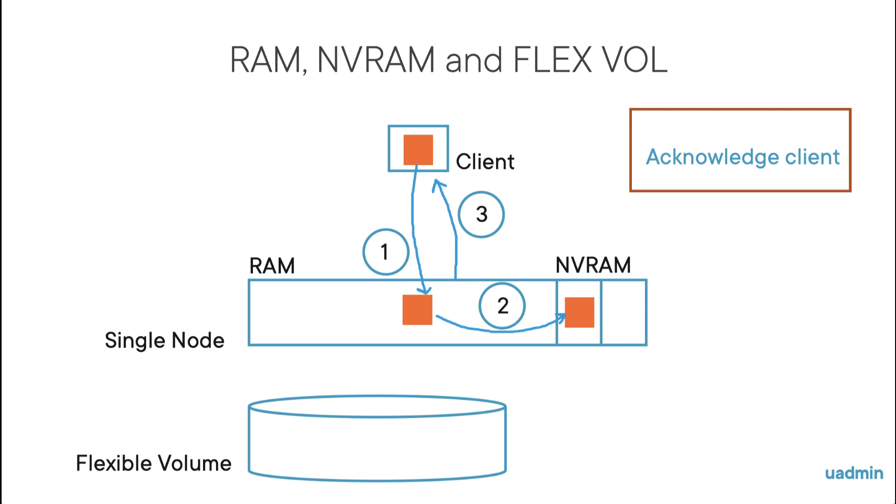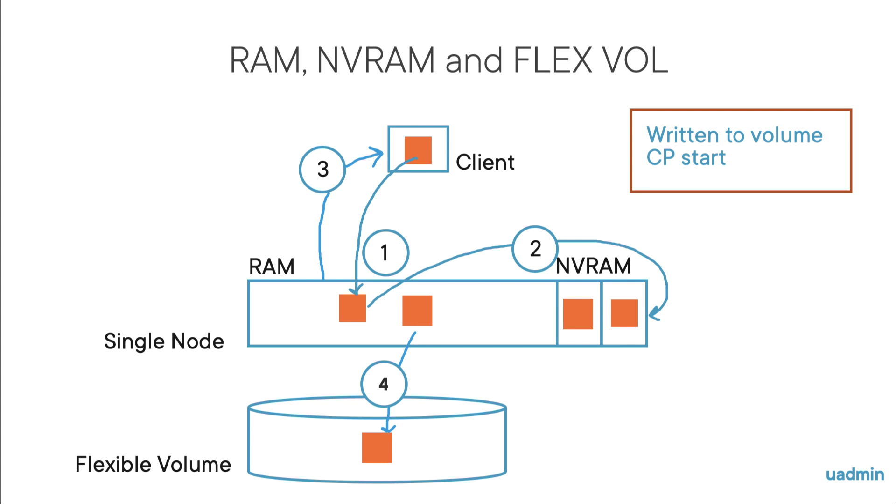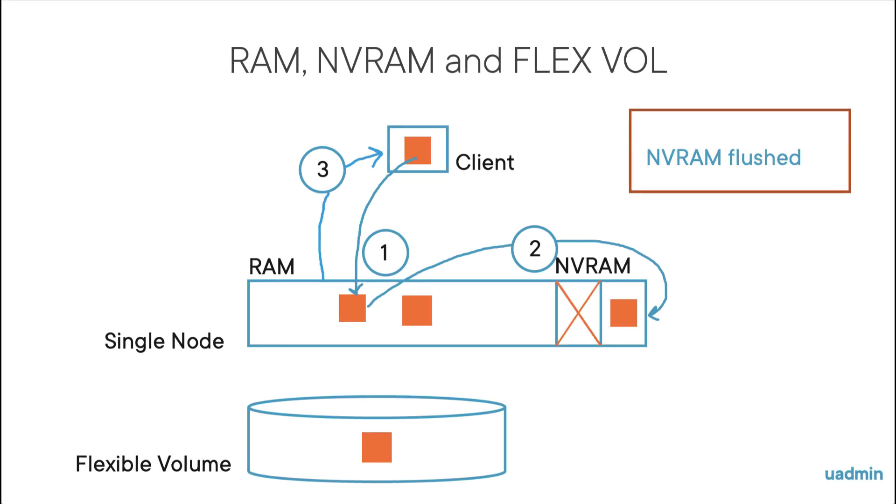Now based on a predefined trigger, the data will be written to the volume. This is the start of a consistency point. During the creation of a consistency point, the clients can still be acknowledged because the second part of NVRAM will be used to make sure the data is safe. And when all the data is on disk, and so the consistency point is complete, NVRAM will be flushed.